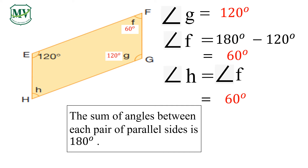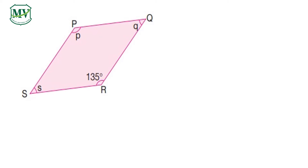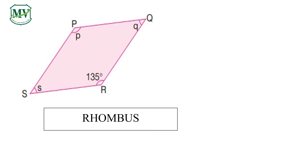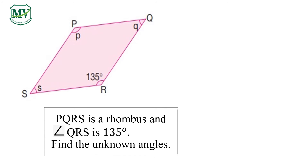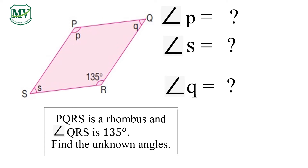The next figure is a rhombus. Can you read this section with me? PQRS is a rhombus and angle QRS is equal to 135 degrees. Find the unknown angles: angle P, angle S, and angle Q.